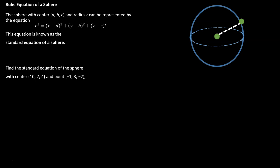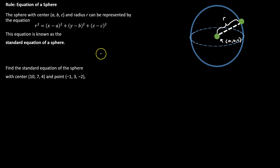Spheres. We've talked about circles, and you've probably seen cylinders. In three dimensions we can talk about a sphere. The definition of a sphere is the set of points that are the exact same distance from a center point. The center is at (a, b, c), and the distance from the center to any point on the sphere is r, the radius. The equation of a sphere is similar to the equation of a circle except it has the z component added on.